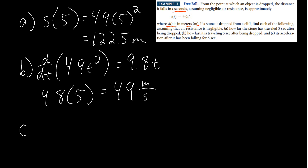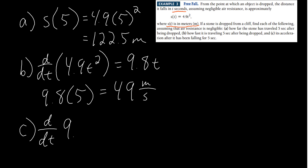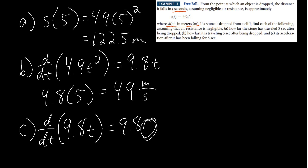Part c: what is the acceleration after 5 seconds? We take the derivative of 9.8t, which is simply 9.8. There's no variable, so it doesn't matter if it's been falling 5 seconds or 10 seconds — its acceleration is always 9.8 meters per second per second, or 9.8 meters per second squared.